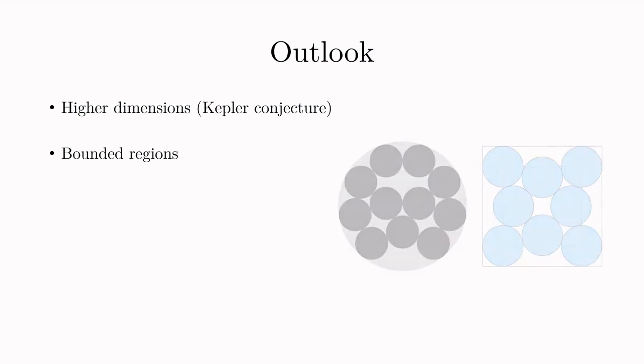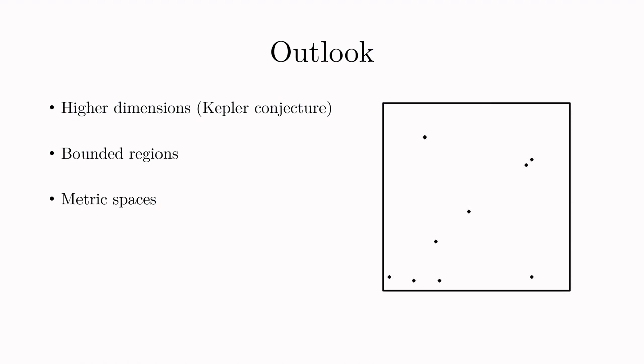As another variation, you could look at general metric spaces. Implicitly, everything we've done here is only about circles with respect to the standard Euclidean metric. But there's nothing preventing you from asking the same question for different metrics, where the circles may look like the ones on the right.